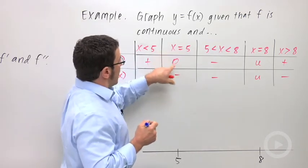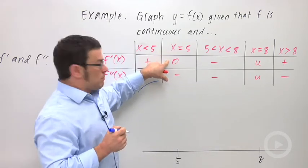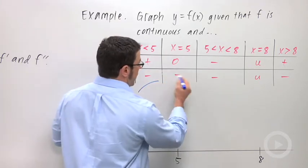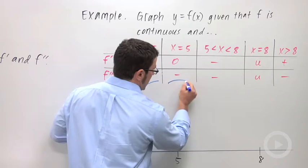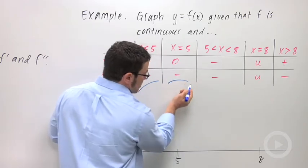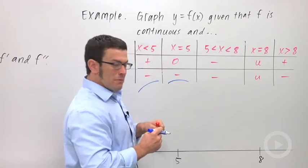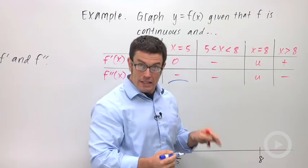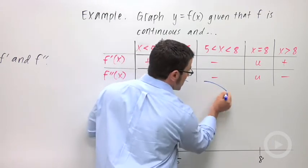At x equals 5, f prime is 0 and f double prime is negative. So that indicates it's concave down but has a horizontal tangent. I'll just draw a little bit of a local maximum. That's what's going to happen there. And then here I've got f prime is negative and f double prime is negative. It's decreasing, concave down. So I'll draw something like that.